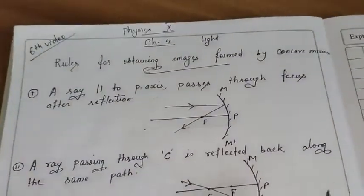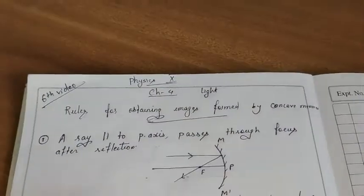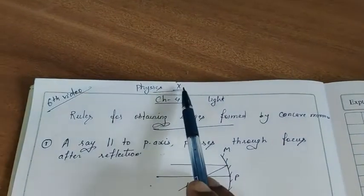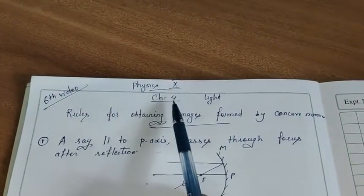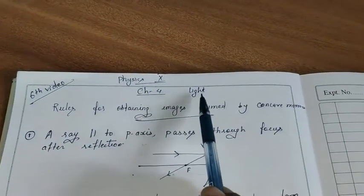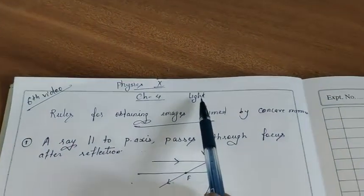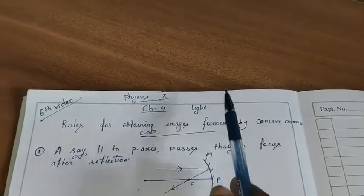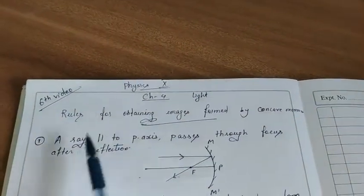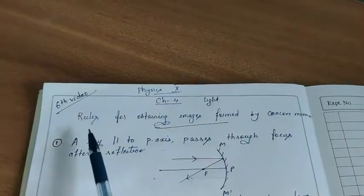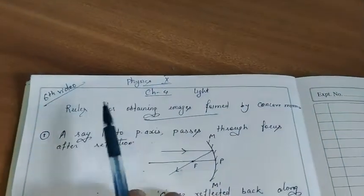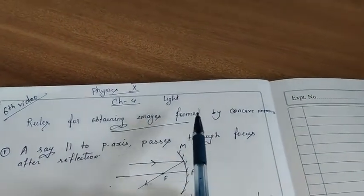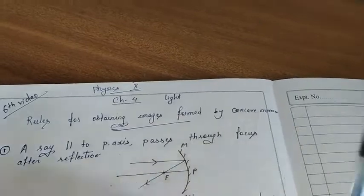My dear students, welcome back in the 6th video. Physics for Class 10, Chapter No. 4, i.e. Light, Reflection and Refraction. We are here to study in this video the topic which is Rules for Obtaining Images Formed by Concave Mirrors.